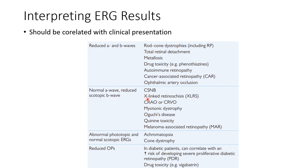Normal A wave and reduced scotopic B wave is seen in conditions like congenital stationary night blindness, X-linked retinoschisis, CRAO or CRVO, myotonic dystrophy, Oguchi's disease, quinine toxicity, and melanoma-associated retinopathy. Abnormal photopic and normal scotopic ERG is seen in conditions like achromatopsia and cone dystrophy. Reduced oscillatory potentials can be seen in diabetic patients and can correlate with increased risk of developing severe PDR, and in drug toxicity like vigabatrin toxicity.